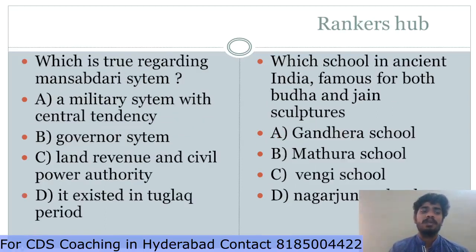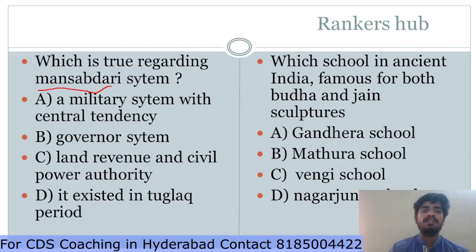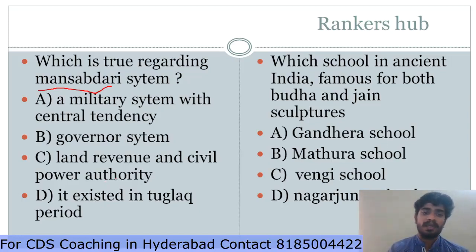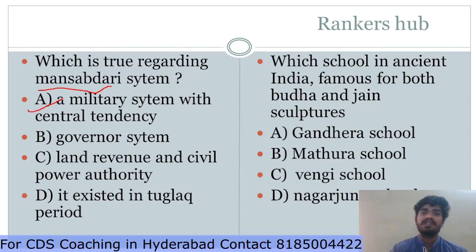Which is true regarding the Mansabdari system? This is from the medieval period. You should know the definitions and the structure of the Mansabdari system. It was a military system with a central tendency governance system. Land revenue and the governor system are eliminated — it was in the Mughal period. Option A is correct: the Mansabdari system was designed as a military system with two branches — Sawar rank and Zat rank.